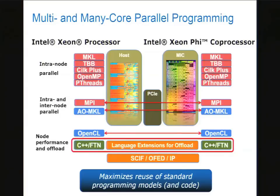We've got two connected Linux hosts with a standard networking interface between them. We call that SCIF — the Symmetric Communication Interface — that's the building block. OFED everybody knows. IP is another layer on top, which Woody referred to as virtual Ethernet. The high-performance paths take advantage of the DMA engines in Knight's Corner or on the InfiniBand cards. The whole idea is to maximize use of standard programming models, standard software, and code reuse.